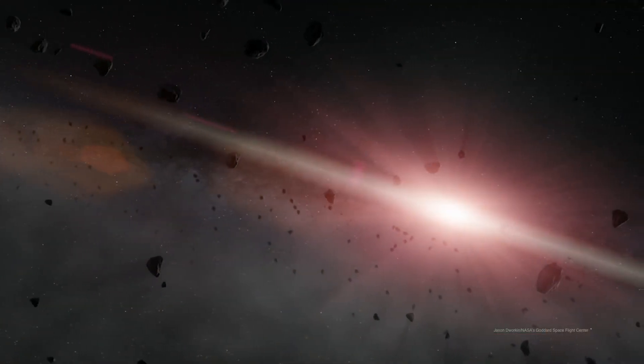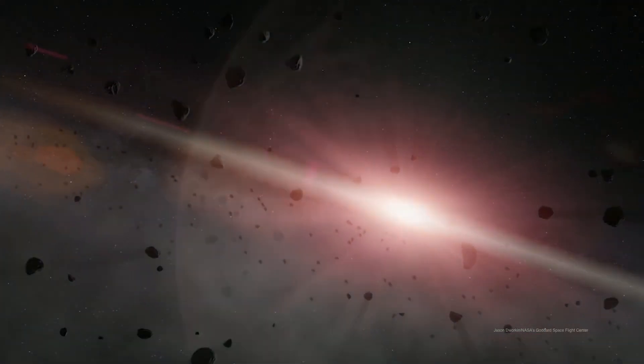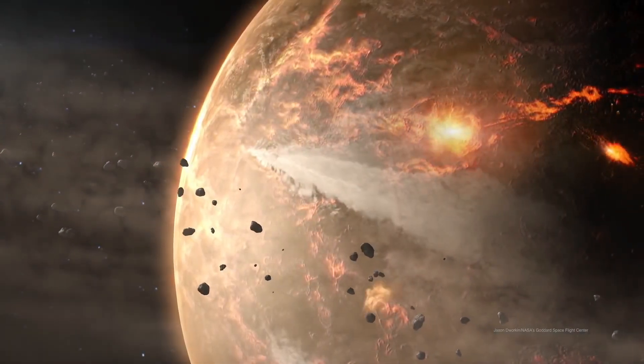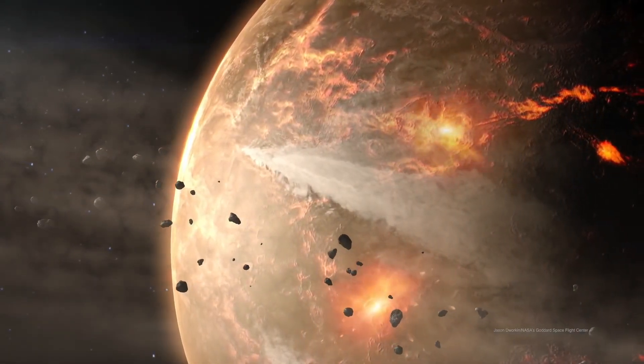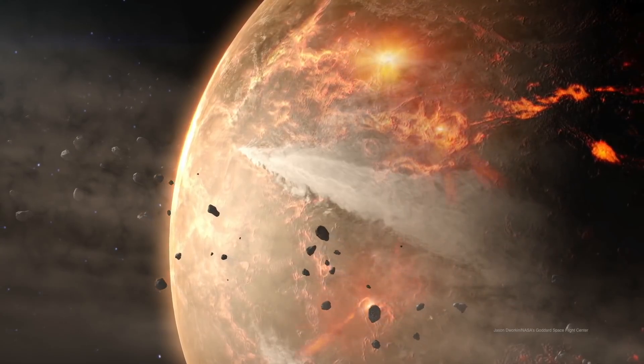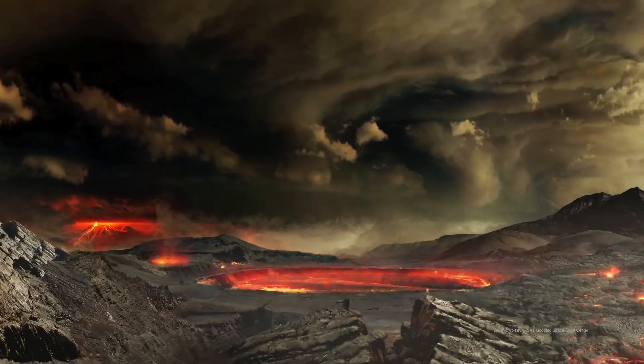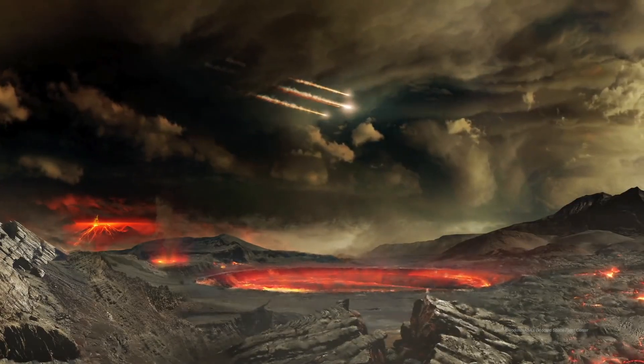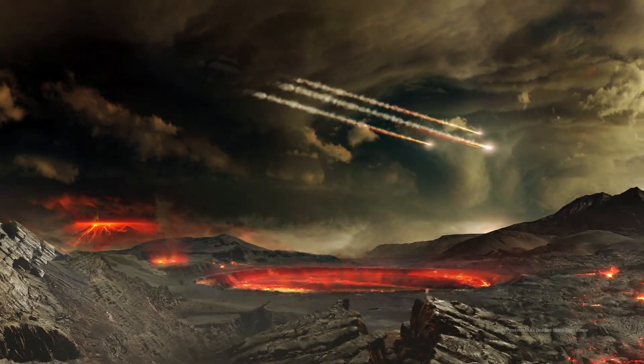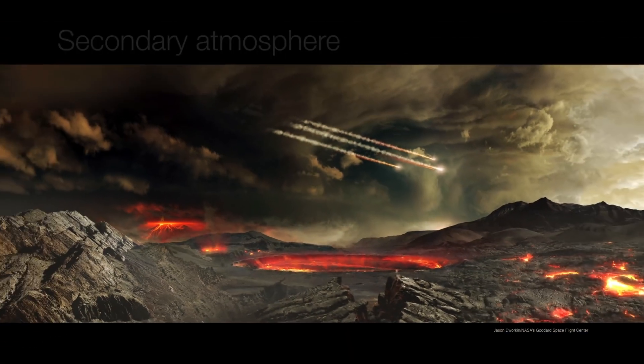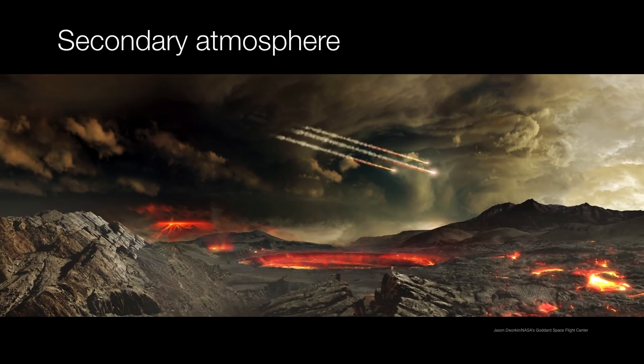However, there are a lot of smaller objects floating around in the solar system, even from the outer solar system. When little tiny planetesimals from the outer solar system fall toward proto-Earth, they deliver these volatiles, and there's already volcanism on the planet. So now we get the formation of a secondary atmosphere.